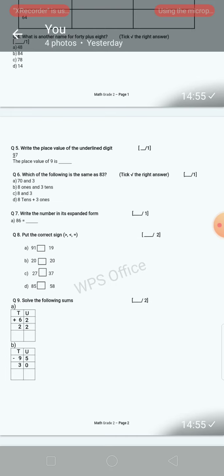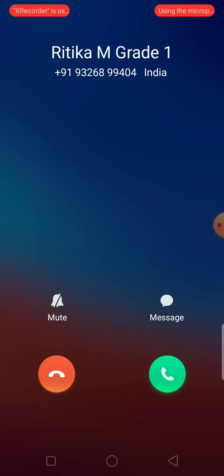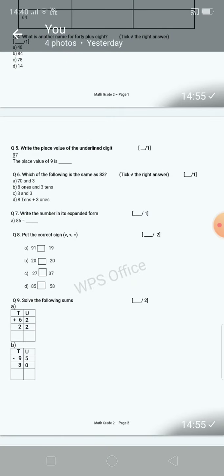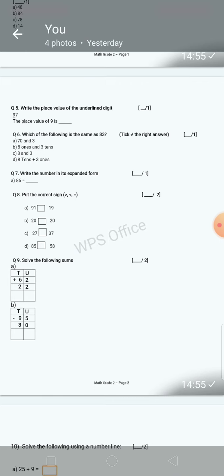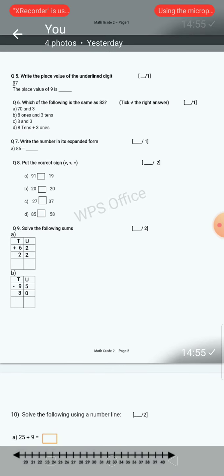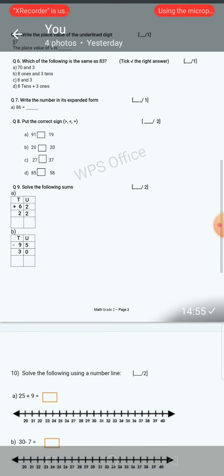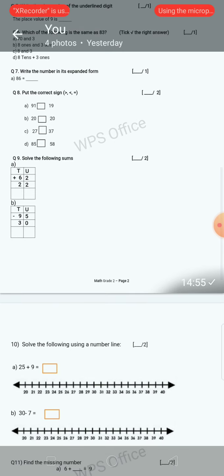Question number 6: Which of the following is same as 83? You have to tick the right answer over here. Also write the number in the expanded form. Question number 7, expanded form you have to write. We all know what is expanded form.